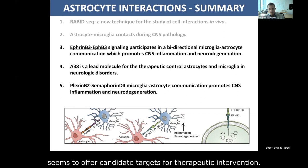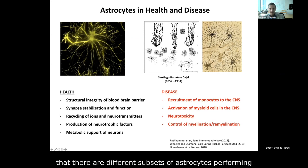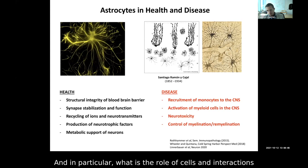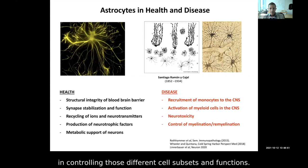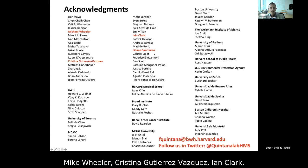To conclude, these studies highlight different astrocyte subsets performing multiple roles in health and disease. The key questions are: what are those subsets, how are they controlled, and what is the role of cell-cell interactions in controlling those functions? I'll finish by acknowledging those who performed these studies: Mike Wheeler, Christina Gutierrez-Vasquez, Ian Clark, and Liana San Marco.